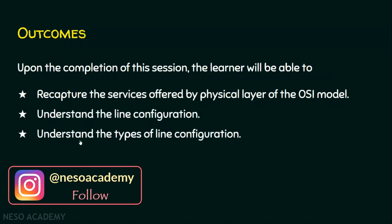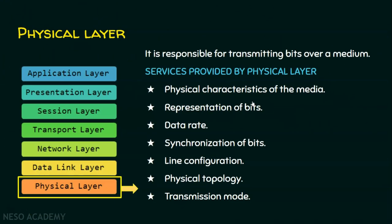We will start the session by having a recapture over the services offered by the physical layer. We have already seen this in the OSI reference model — just a small recapture. We have seven layers in the OSI model, and the bottom-most layer is the physical layer.